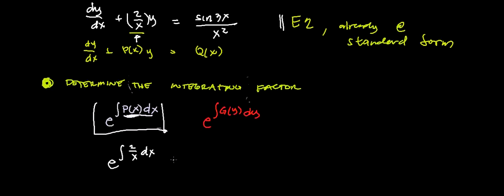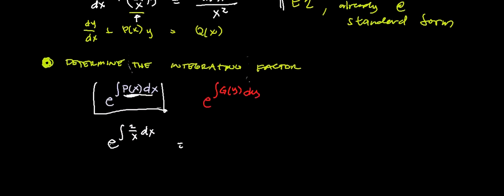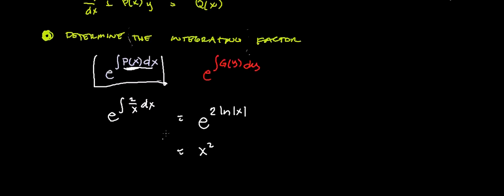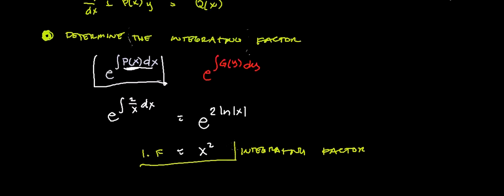We need to integrate and take e raised to this integral. The integral of 2 over x dx is 2 ln x, so our integrating factor is e raised to 2 ln x, which equals x squared. This is now our integrating factor: x squared.